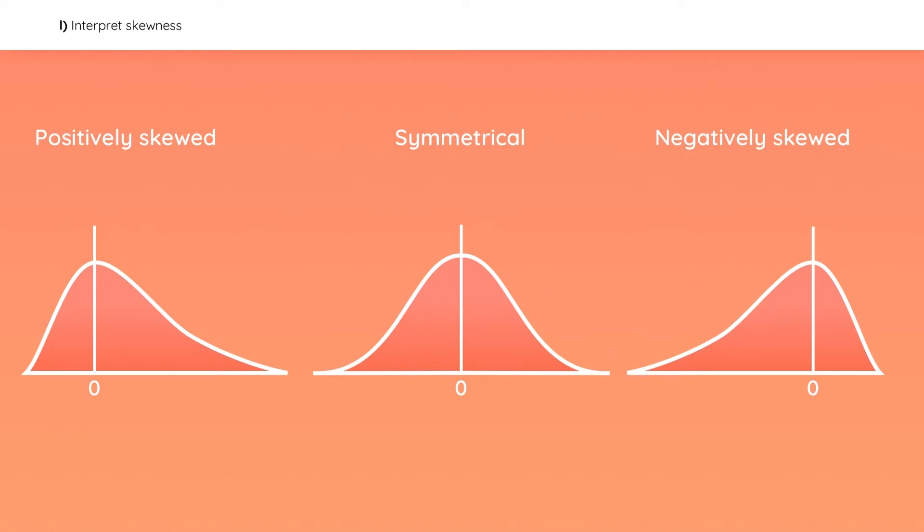Notice how positively skewed means that it has a right tail, which indicates that it has many outliers in the upper region. So very large gains are possible, but don't happen very often. The mean is closest to the tail, so it is the largest value, followed by the median, and then the mode.